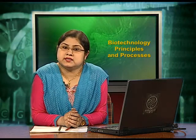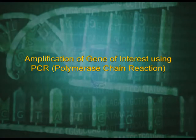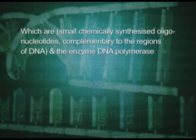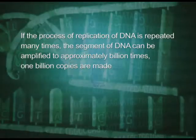The next process is the amplification of the gene of interest using PCR, which stands for polymerase chain reaction. In this reaction, multiple copies of the gene or DNA of interest are synthesized in vitro using two sets of primers, which are small chemically synthesized oligonucleotides complementary to the regions of DNA, and the enzyme DNA polymerase. The enzyme extends the primers using the nucleotides provided in the reaction and the genomic DNA as template. If the process of replication of DNA is repeated many times, the segment of DNA can be amplified to approximately one billion copies.